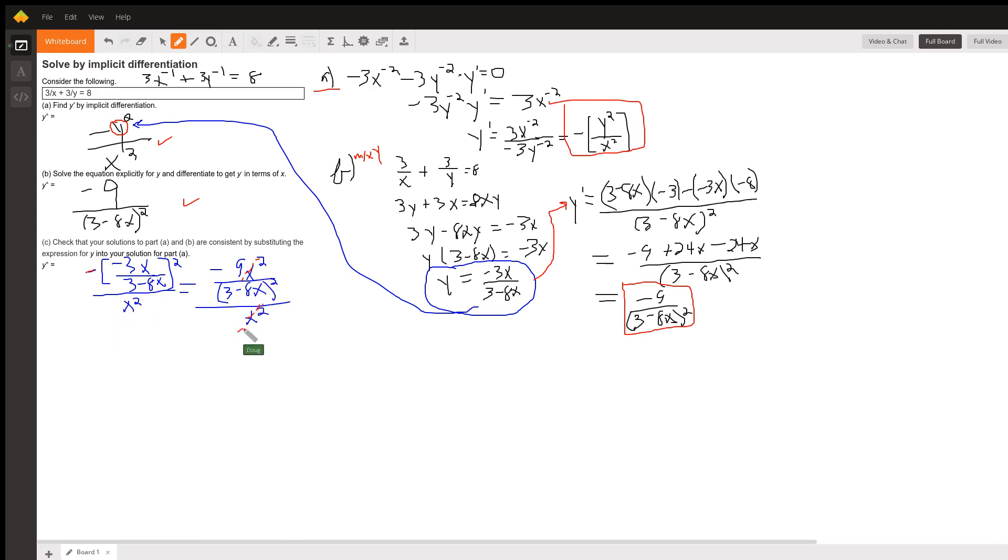The x squareds cancel out. And I've got minus 9 over 3 minus 8x quantity squared, which is exactly what we got in part b.